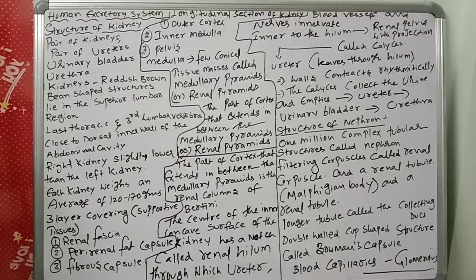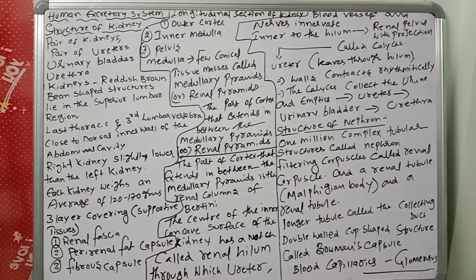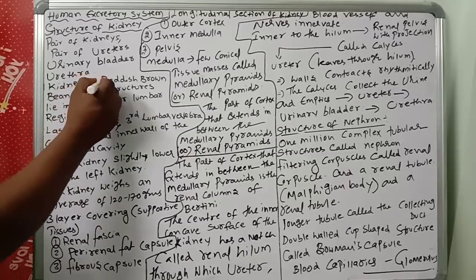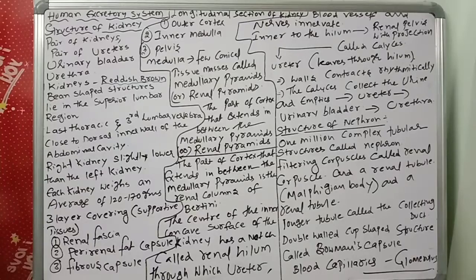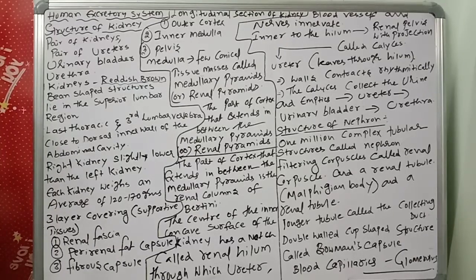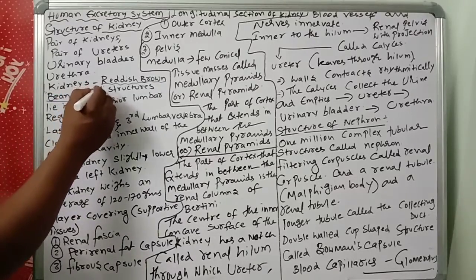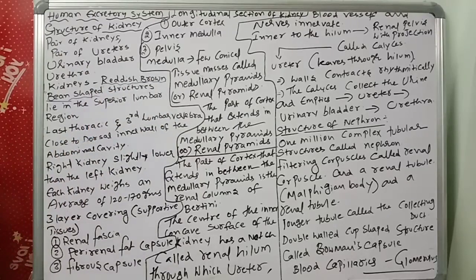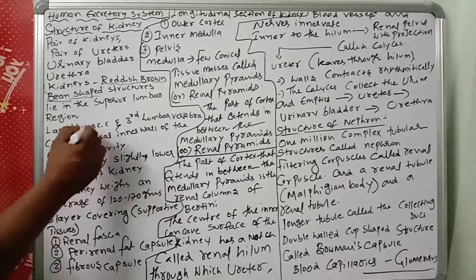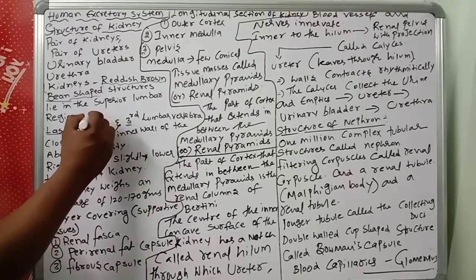The kidneys are reddish-brown in color — that is the first important point. They are bean-shaped structures. They lie in the superior lumbar region, between the levels of the last thoracic and third lumbar vertebrae.